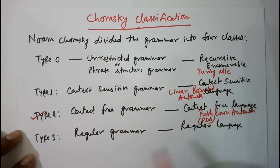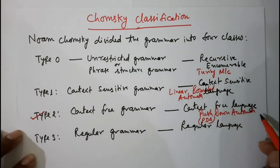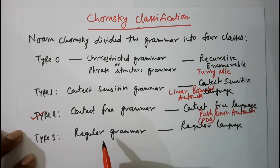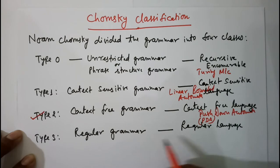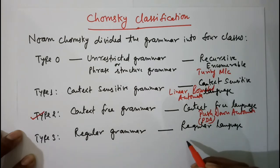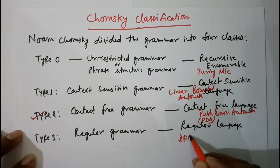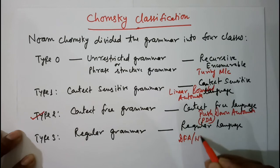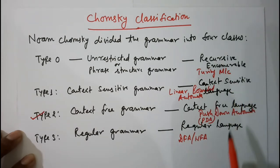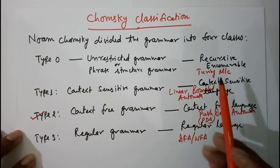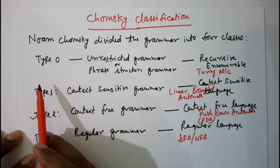More precisely, Deterministic Pushdown Automata, but Pushdown Automata in general. For Type 3 language, the corresponding machine is DFA. You have already seen what is DFA or NFA. These are the machines which are going to accept the languages produced by their corresponding grammars.